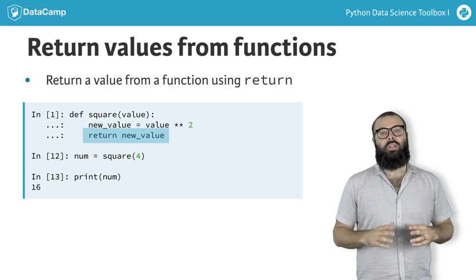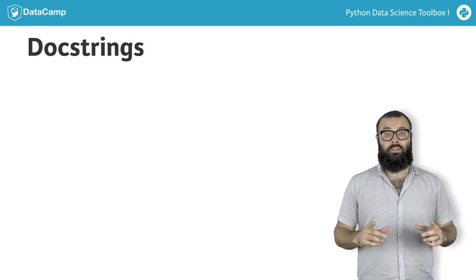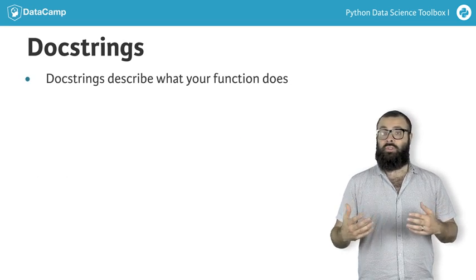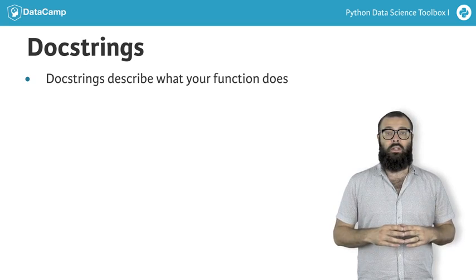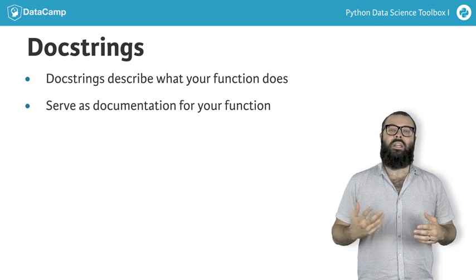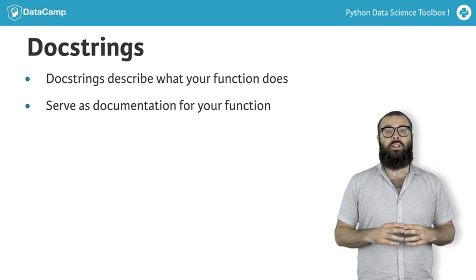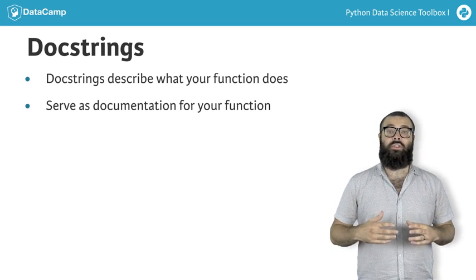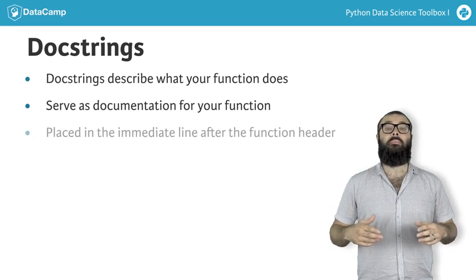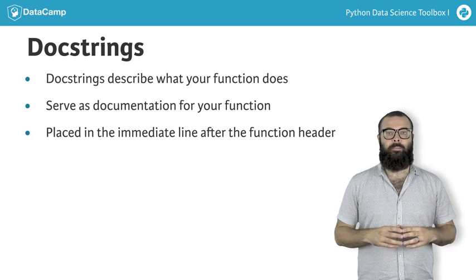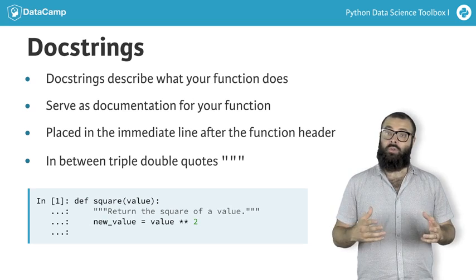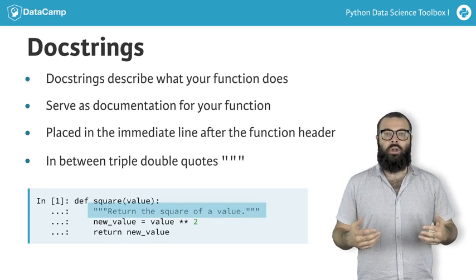There's another essential aspect of writing functions in Python: doc strings. Doc strings are used to describe what your function does, such as the computation it performs or its return values. These descriptions serve as documentation for your function so that anyone who reads your function's doc string understands what your function does without having to trace through all the code in the function definition. Function doc strings are placed in the immediate line after the function header and are placed between triple quotation marks. An appropriate doc string for our function square is, returns the square of a value.